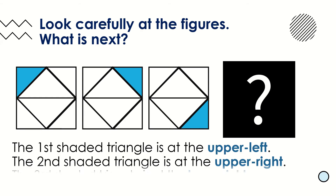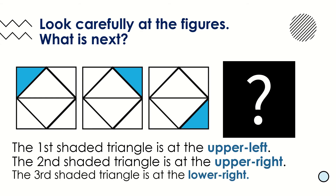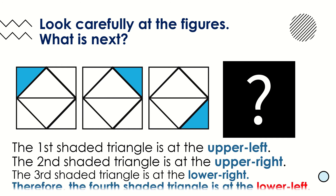Now let us answer some drills. Look carefully at the figures — what is next? There are three squares in the given sequence. Each square is composed of six triangles, and there is a shaded triangle on each square. The first shaded triangle is located at the upper left part, the next at the upper right, and the third at the lower right. From the given pattern, we can conclude that the fourth shaded triangle is at the lower left.